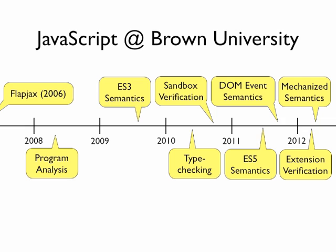We got started back in 2006 with Flapjacks, a reactive language built atop JavaScript, and have since moved on to semantics, analyzers atop these semantics, and applications of these analyzers. All our work is open source and actively maintained, and helps lower barriers to entry to doing research on JavaScript.